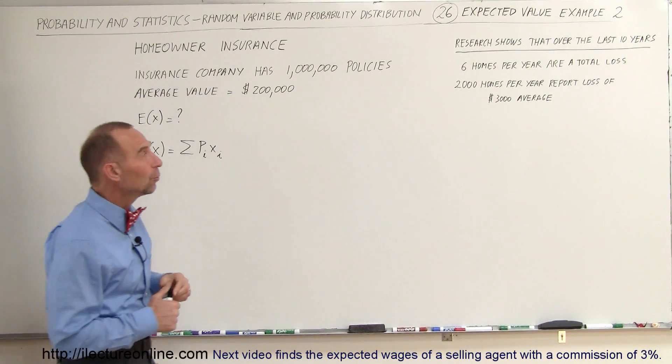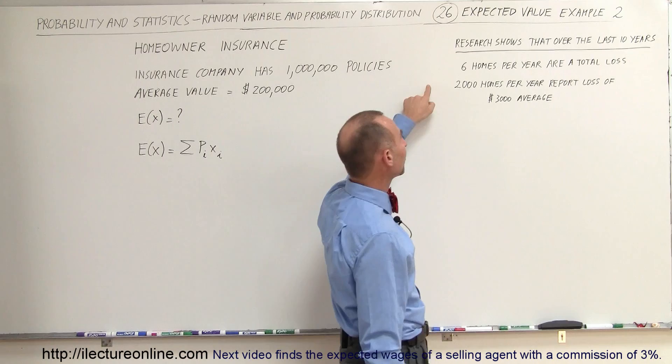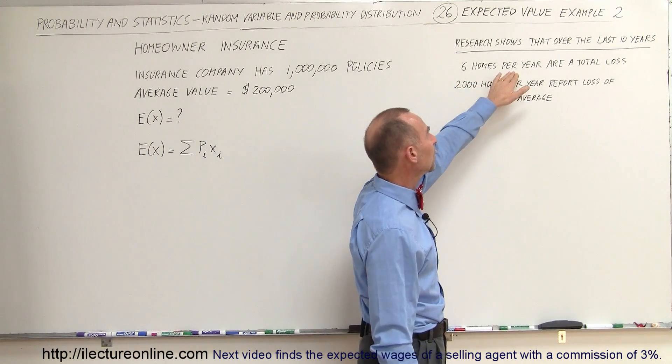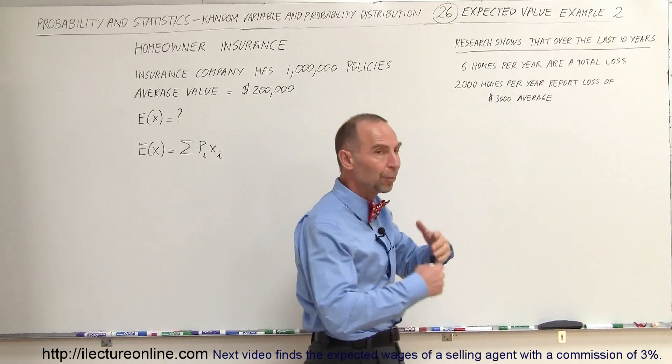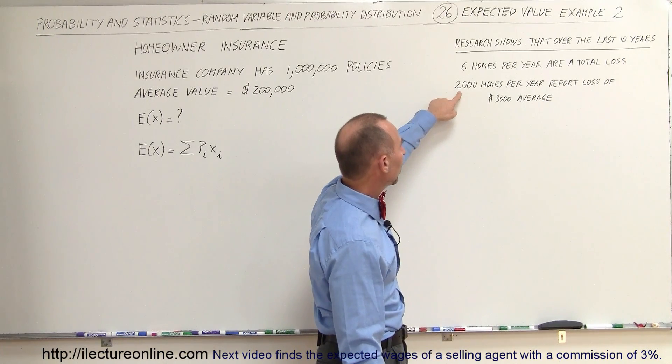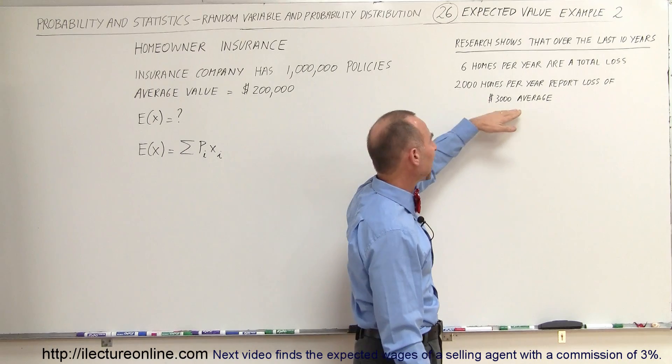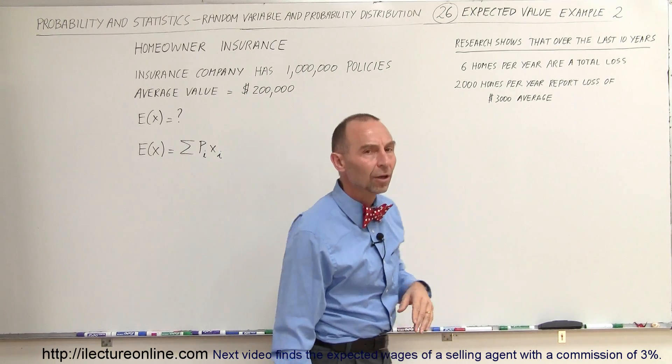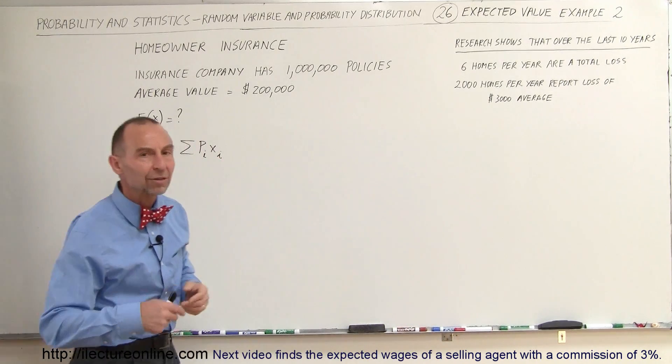Let's say that the company has done research and over the last 10 years on average, six homes out of those million were a complete total loss, meaning they burned down or something happened to them that they would have to be replaced. 2,000 homes per year reported loss of an average of $3,000 of damage that need to be replaced by the company.